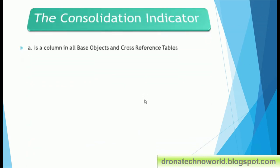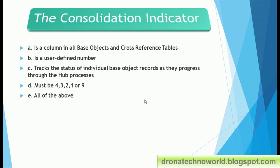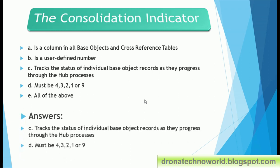Next: the consolidation indicator — option A: is a column in the base object and cross-reference table; option B: is a user-defined column; option C: tracks the status of individual base object records as they progress through hub processes; option D: must have values 4, 3, 2, 1, or 9. The correct answer is option C and D — it tracks the status of individual base object records as they progress through the consolidation process, and must have values 1, 2, 3, 4, or 9.